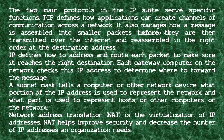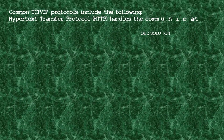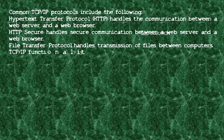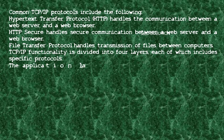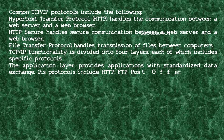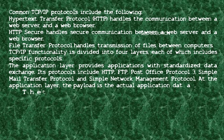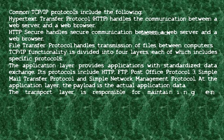IP defines how to address and route each packet to make sure it reaches the right destination. Each gateway computer checks the IP address to determine where to forward the message. A subnet mask tells a computer what portion of the IP address represents the network and what part represents hosts. Network Address Translation (NAT) is the virtualization of IP addresses and helps improve security and decrease the number of IP addresses an organization needs.